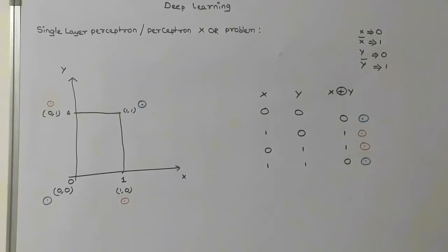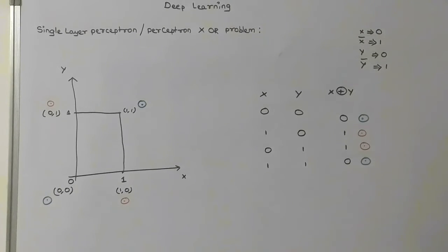Now we will try to separate the data using a single layer perceptron. Single layer perceptron means we have only one layer, so we can split the data only once. We have to separate the data using this single layer. We cannot split in multiple passes because we have only one layer in this model. I want to separate the red dots on one side and the blue dots on the other side.